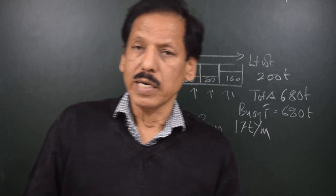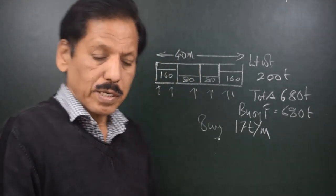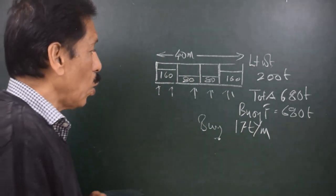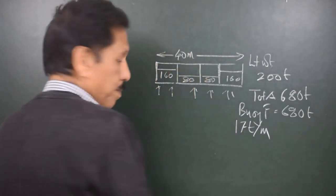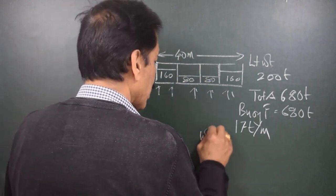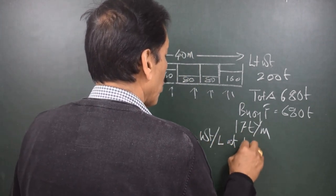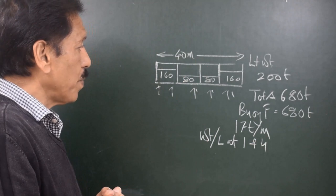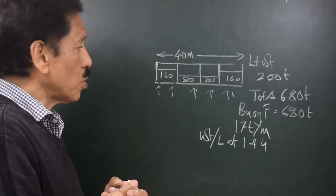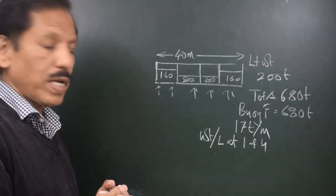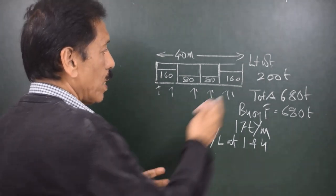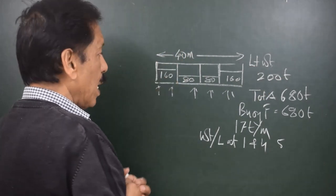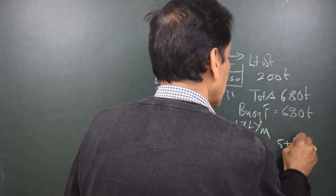There is a difference between the upward force and downward force at different points. The difference of buoyancy and weight at any given point is called load — load is different from weight. The weight per unit length at holds 1 and 4 consists of the lightweight contribution of 200 ÷ 40 = 5 tons per meter, plus cargo of 160 ÷ 10 = 16 tons per meter.